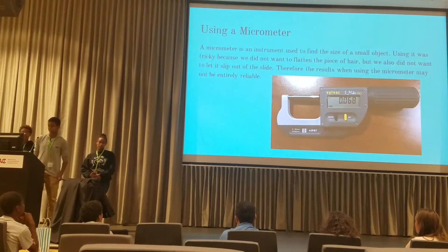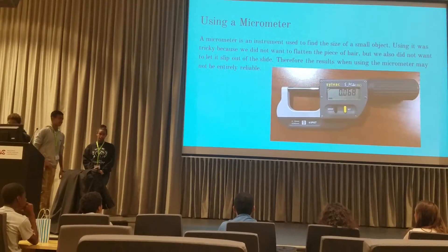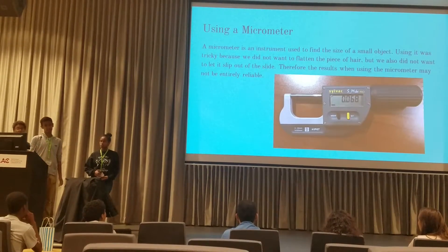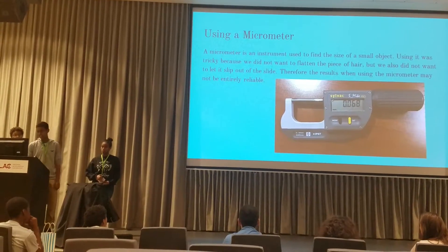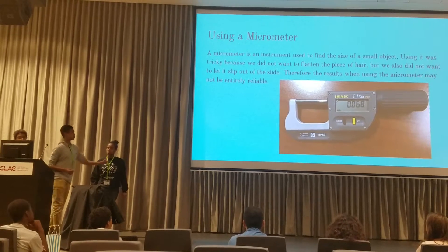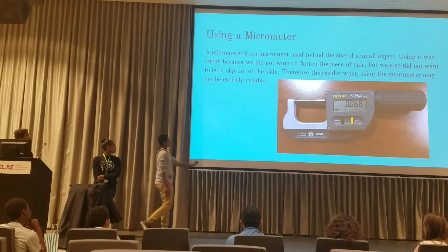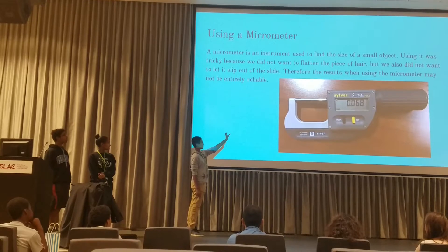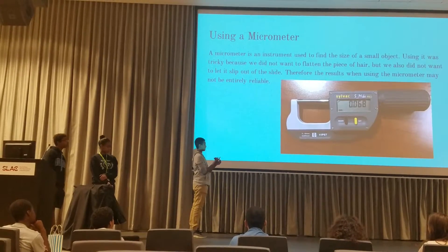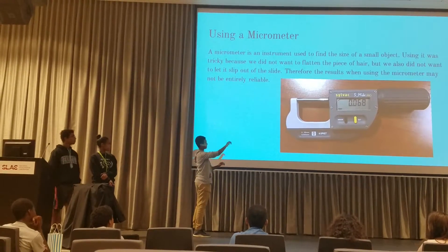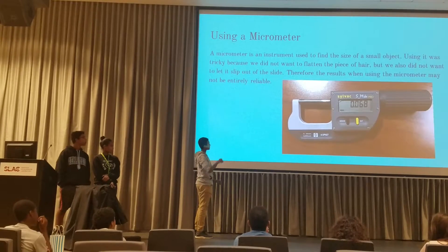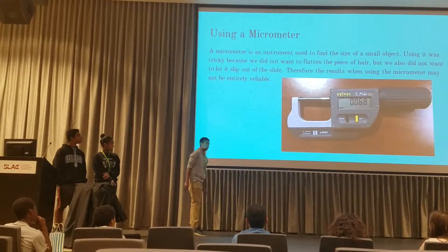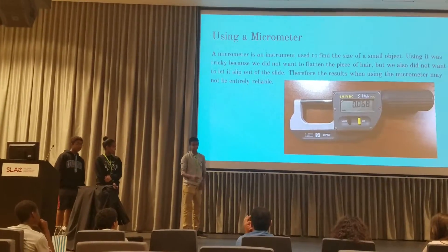We also used a micrometer, which is an instrument that you can use to find the diameter of a small object. There are two metal pieces that open up, and you put your object through there, then twist the handle, and it will show you how wide the object is.